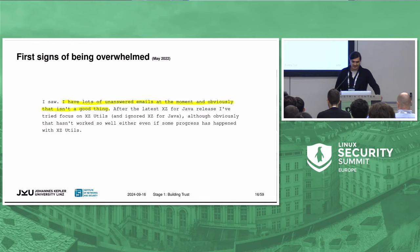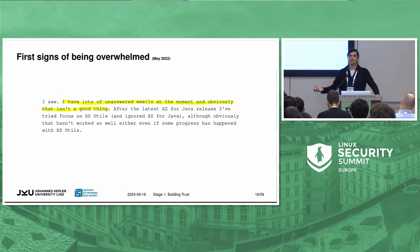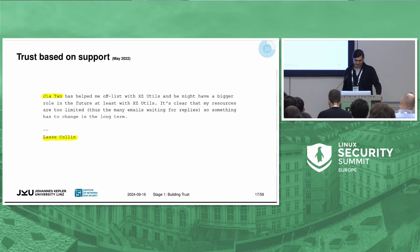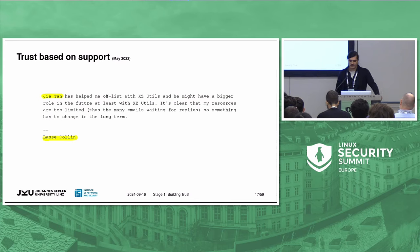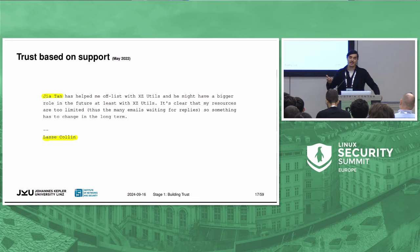Then in May 2022, we saw the first signs of being overwhelmed by the original maintainer, Lasse Collin. He stated he has a lot of unanswered emails at the moment. These are the first signs of a small open source developer with a lot of responsibility being overwhelmed. Then we see that Lasse Collin mentioned the attacker user JiaTan for the first time, saying he might play a bigger role in future, and that JiaTan is very supportive — building up a certain trust relationship to that user.